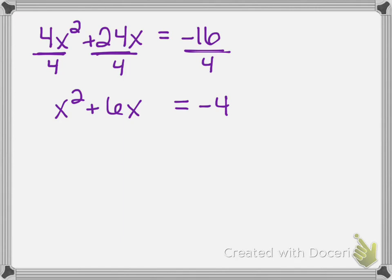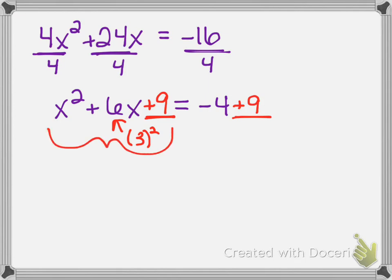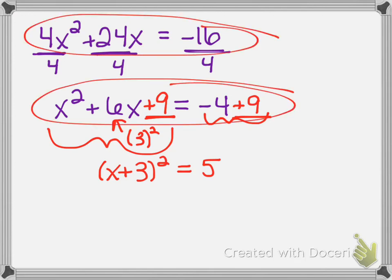Working with the simplified equation, we complete the square and keep the equation balanced. We take the middle term coefficient, chop it in half to get 3, and square it. So we put plus 9 on the left, which means we also put plus 9 on the right side to keep it balanced. Everything on the left forms a perfect square quadratic and factors as x plus 3 squared. Everything on the right combines to give 5. Now the equation is in a new form and we can peel the layers to get x by itself — we only have one x now.